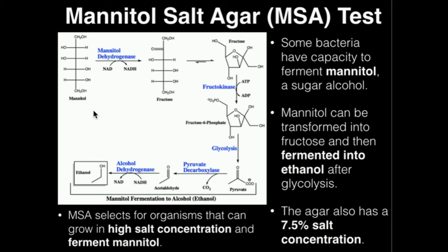Mannitol can be converted ultimately to fructose. Then fructose can be converted through an enzyme called fructokinase to fructose-6-phosphate. Fructose-6-phosphate is an intermediate in glycolysis, and so glycolysis will continue as normal to produce pyruvic acid or pyruvate. Pyruvate can then be fermented — not to lactic acid, but through a different pathway towards ethanol, which is alcohol fermentation. Pyruvate will be decarboxylated to acetaldehyde and then reduced to ethanol.